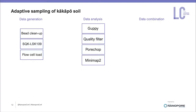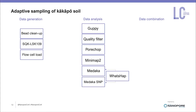I then used Medaka for variant calling. Medaka intrinsically uses WhatsHap for read-based haplotype phasing, and combining both with the Medaka SNP approach allows extraction of all possible genotypes in GVCF files, not only variants. With this I ended up with around 26,000 SNPs or variants, and from WhatsHap I was able to extract nearly 500 haplotypes.